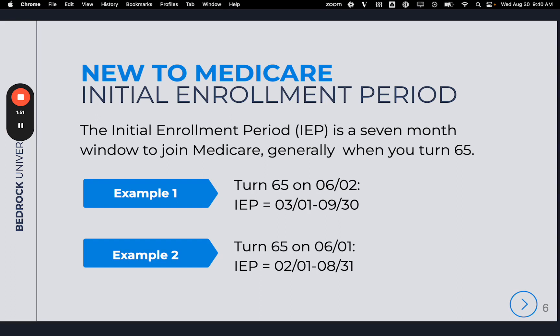The first and most common example is when someone turns 65 on the second day of the month or later — their IEP will begin three months prior to their birthday month. For example, someone who turned 65 on June 2nd or later in the month will begin their IEP on March 1st and end it on September 30th, or the last day of that month.